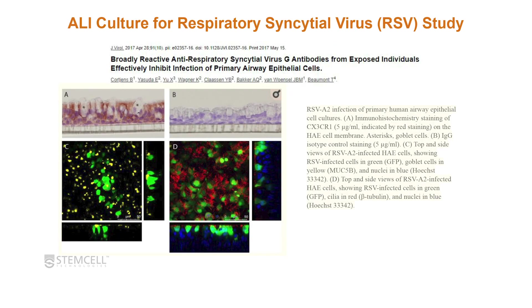Now I'm going to go over a few papers that have used ALI cultures in the investigation of different viruses. This first study looked at respiratory syncytial virus (RSV-G), with cells growing at air liquid interface. The asterisks indicate the presence of goblet cells, stained yellow. In parts B and D they're looking at cilia, stained red, and their RSV is tagged with GFP. You can inoculate these cultures with the virus and examine if it's being internalized and the spread of the virus over time.